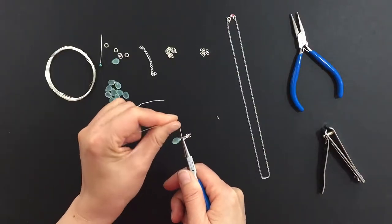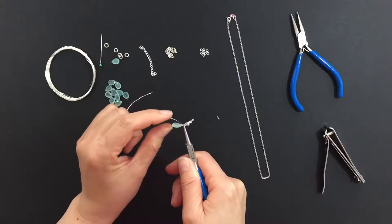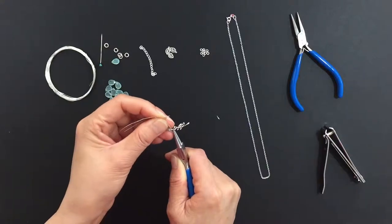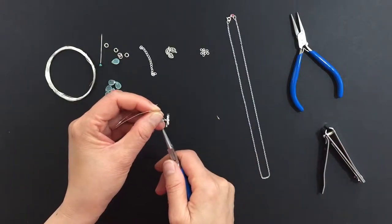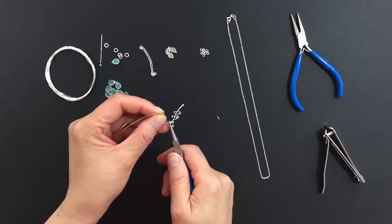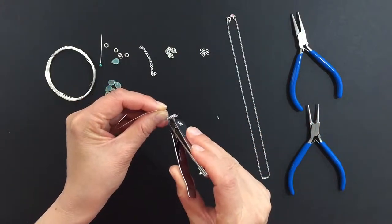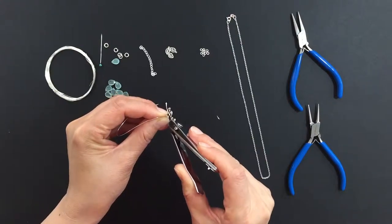Holding the loop firmly with the pliers, wrap the wire around one and a half times and clip off the excess.